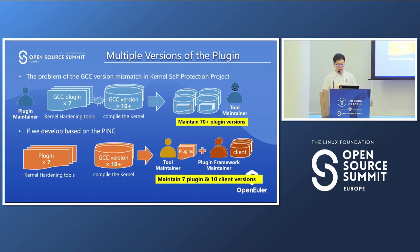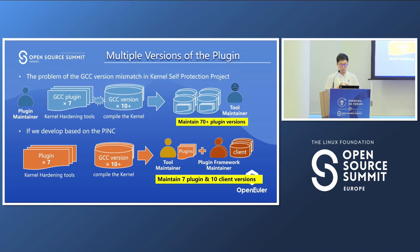Let's review the issue mentioned earlier: the compilation would fail when the GCC client used to compile the module was even slightly different from the one used to build a kernel. This causes plugin maintainers to spend a lot of effort maintaining plugins for each GCC version. But if we develop based on PINK, because the plugin logic is decoupled from the compiler, plugin maintainers only need to focus on maintaining their own plugin logic. The plugin framework maintainers can support multiple versions of GCC based on the GCC client. So the division of labor is clear, efficiency is higher, and the workload of maintenance is greatly reduced.